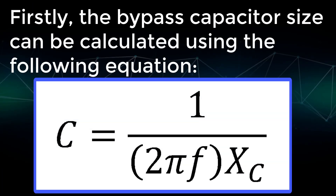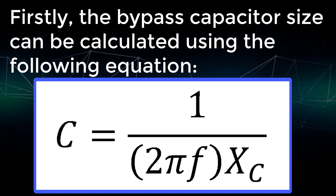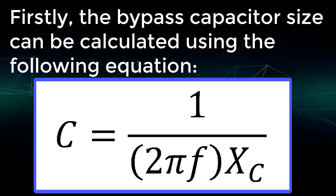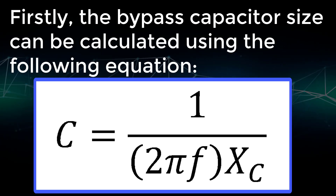Firstly, the bypass capacitor size can be calculated using the following equation: C equals 1 divided by 2π times f times Xc.